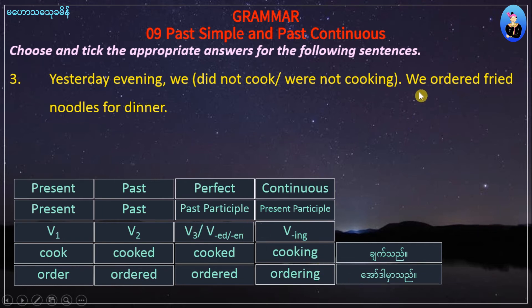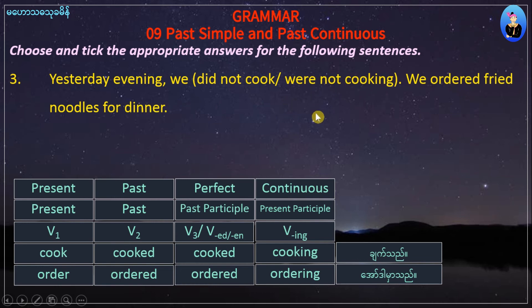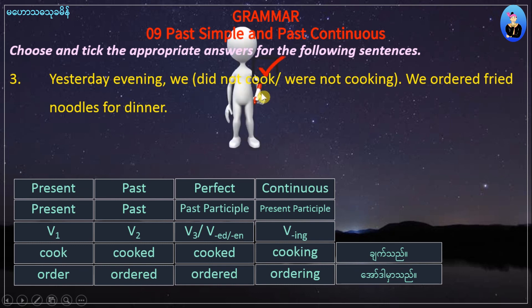We ordered fried noodles for dinner. We are not cooking. We are not cooking the things. We can cook our sandwiches. We don't cook the dishes.